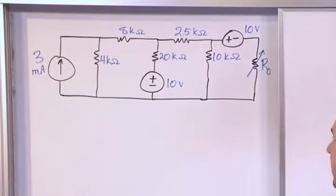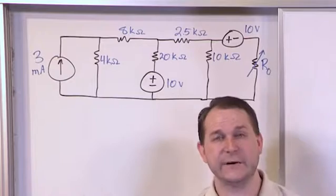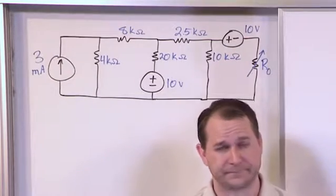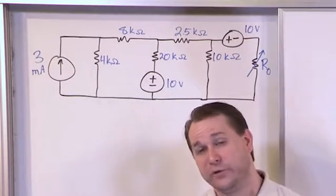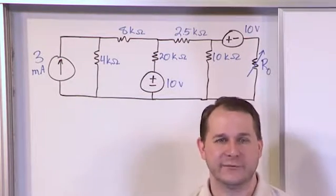And the question is, well actually there's two questions. What is the value of R naught needed for maximum power transfer to R naught? And the second question is, once we meet that condition, once we adjust it properly, how many watts are actually delivered to R naught?